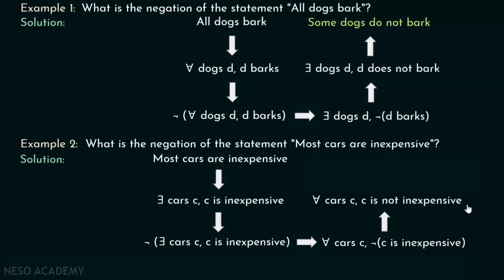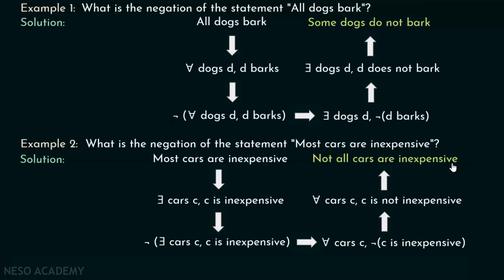'Not c is inexpensive' can be written as 'c is not inexpensive.' Finally, we can convert this statement into: 'not all cars are inexpensive.' This is the negation of the statement 'most cars are inexpensive.'